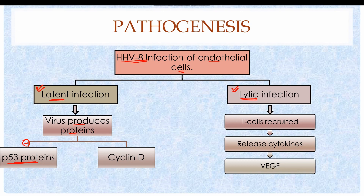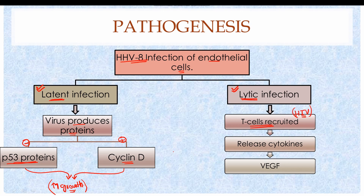The viral proteins also activate or upregulate cyclin D, which is a proliferating factor. So inhibition of p53 proteins and upregulation of cyclin D results in excessive growth of endothelial cells. In lytic infections, T cells — which are affected with HIV — are recruited to the site. The cytokines released by these infected T cells activate vascular endothelial growth factor (VEGF), which also promotes endothelial proliferation. Both of these factors ultimately lead to the formation of a tumor.